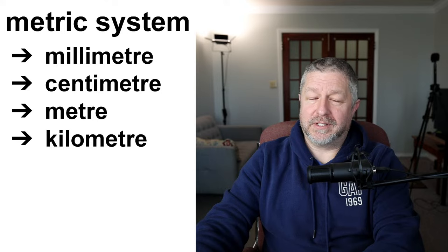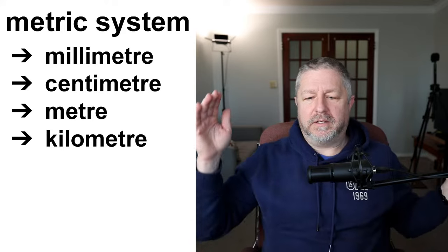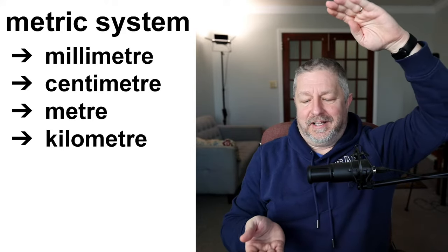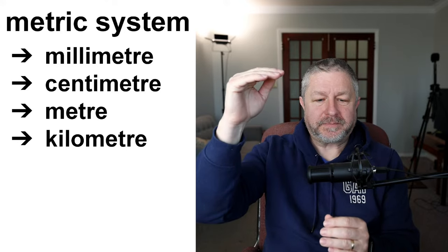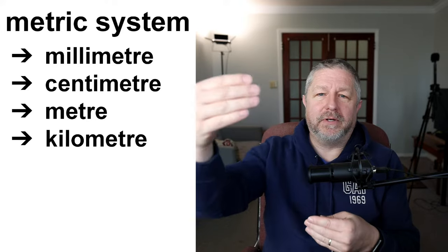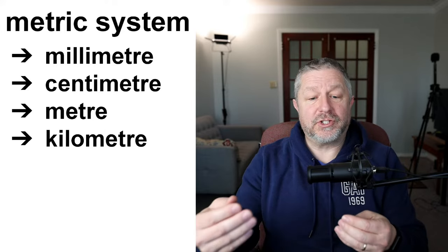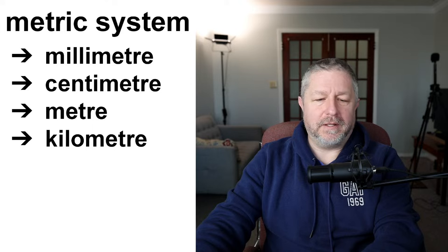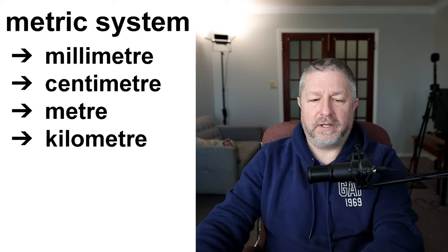Let's talk about the metric system and the imperial system quickly. In the metric system, we measure distances based on the meter. A millimeter is very tiny, a centimeter is a little bigger, a meter is about this long, and a kilometer is a measure of distance — I live about 20 kilometers from my sister. In the United States you can spell these ending in E-R. The imperial system uses inches and the foot. A yard is three feet. An inch is about 2.5 centimeters; a foot is about 30 centimeters.